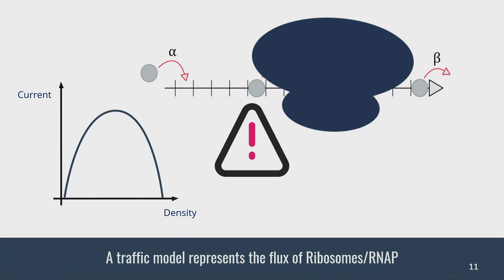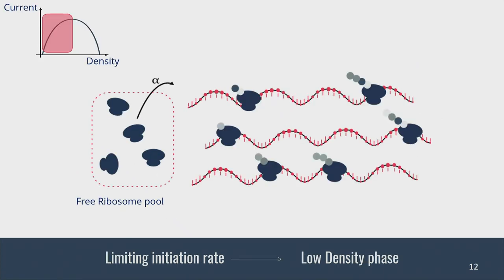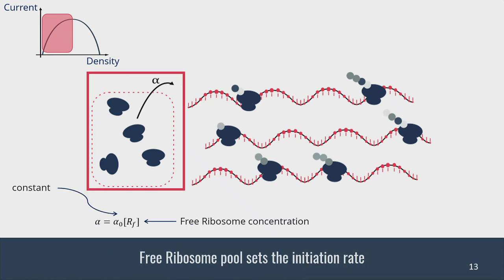We want to apply the traffic model to translation. In translation, every mRNA is a lattice and the ribosomes go over it. The initiation rate depends on the free ribosome pool — so every inactive ribosome — and the initiation rate then depends on the free ribosome concentration. As the number of ribosomes increases, you have a higher ribosome pool, there's a higher initiation rate, and thus your amount of ribosomes on the mRNA will increase.